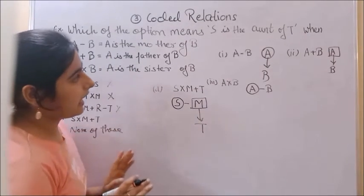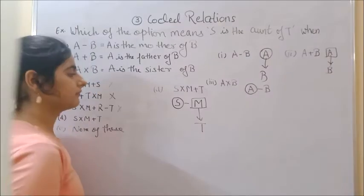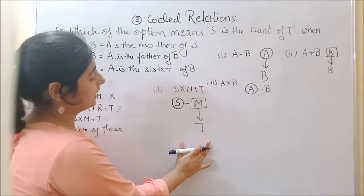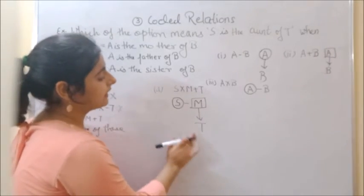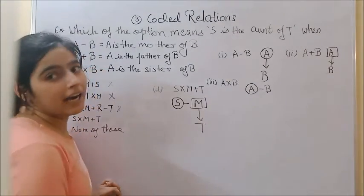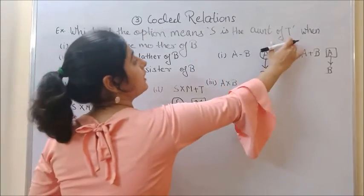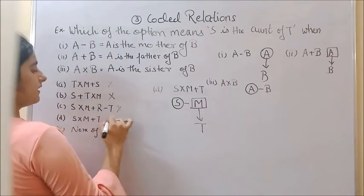The statement is S is the aunt of T. Is it yes? M is T's father. S is M's sister. Therefore S is T's paternal aunt. Therefore S is the aunt of T. The fourth option is correct.